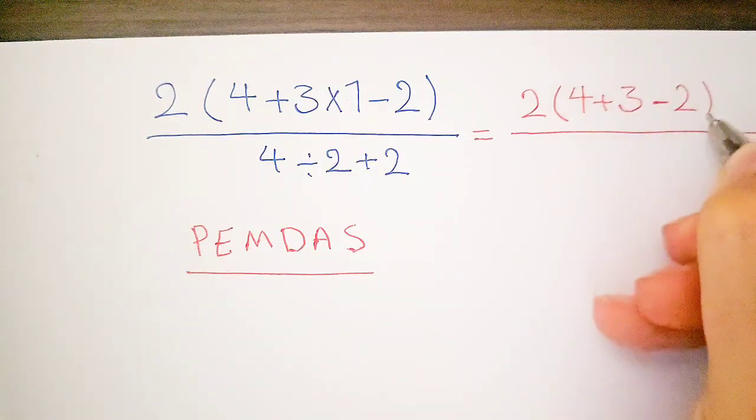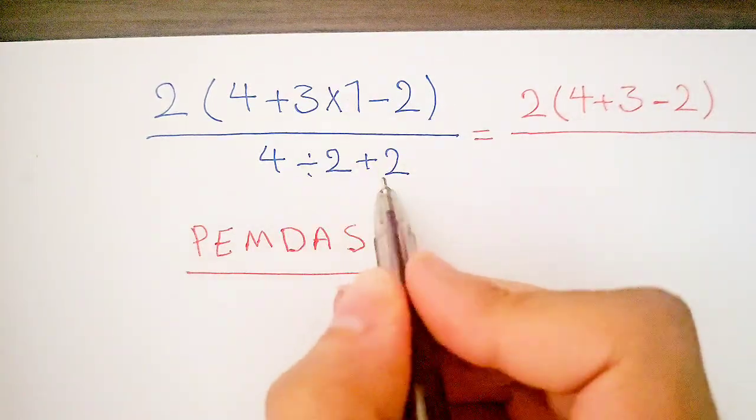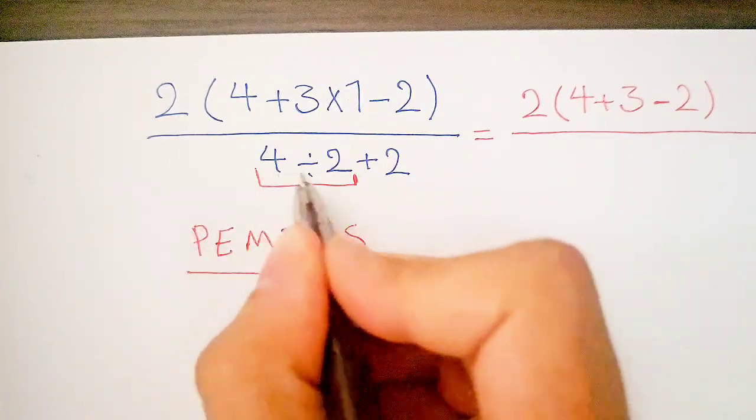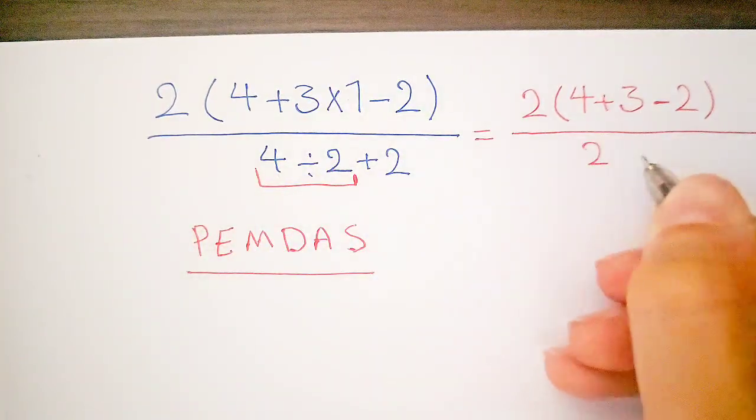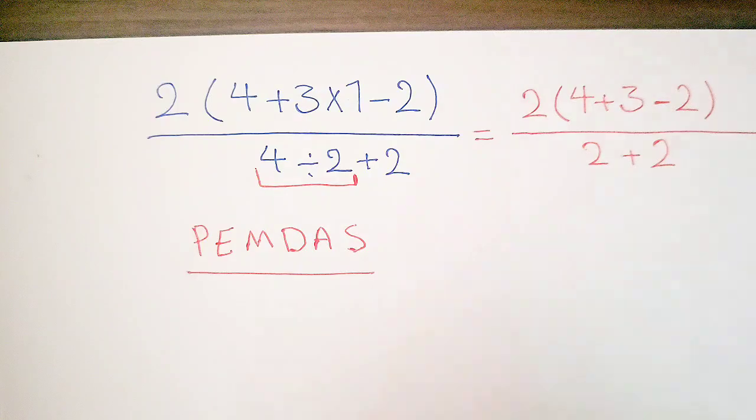We simplify the numerator and the denominator. First we simplify the division in the denominator: 4 divided by 2 equals 2 plus 2.